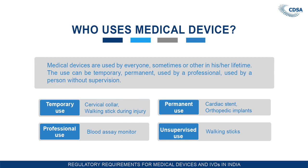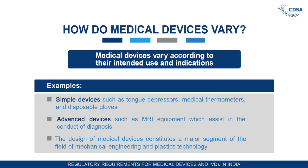A concern remains that these rules do not cover regulation of all types of medical devices, because the Drugs and Cosmetics Act has no separate provision specifically defining medical devices. Medical devices vary according to their intended use and indications — from simple devices such as tongue depressors, thermometers, and disposable gloves, to advanced equipment such as MRI machines which assist in the diagnosis of disease. Device design constitutes a major segment of mechanical engineering and plastics technology.